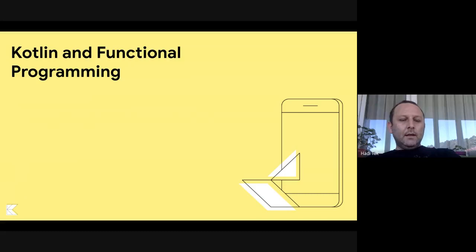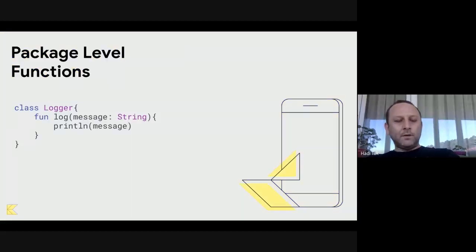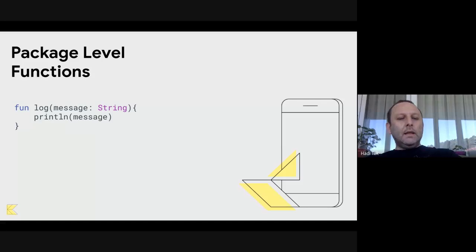Let's see how Kotlin can provide functional programming language features. The first feature is package-level functions. In this example, all I need is a function that will log our messages. We don't need to do anything with this class, so with package-level functions we can get rid of the class and import this package whenever we need to use it, and just use it like another function.